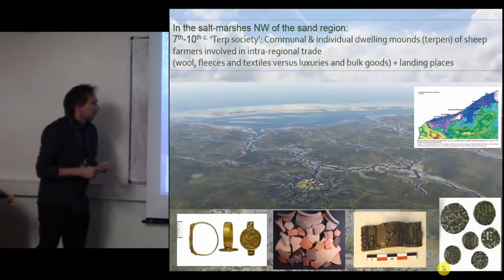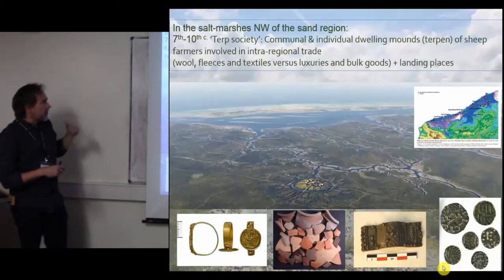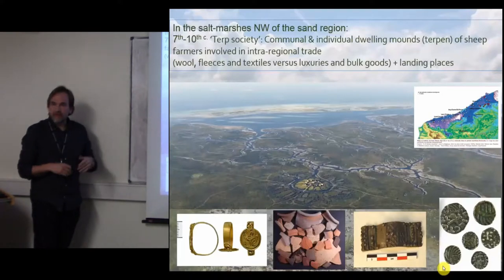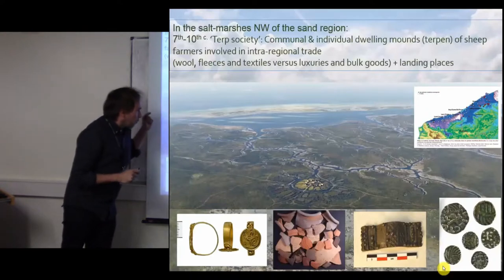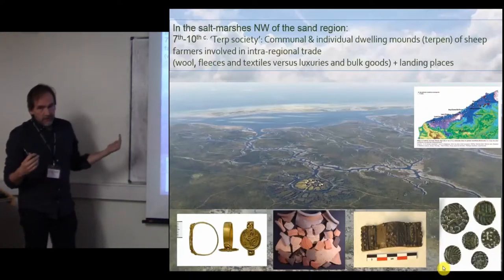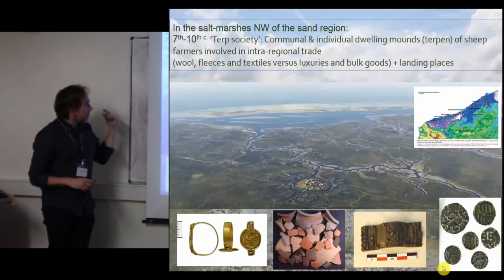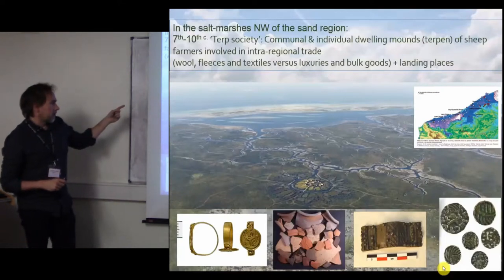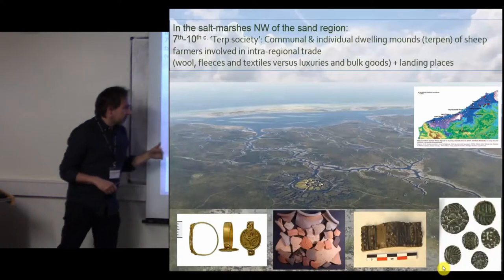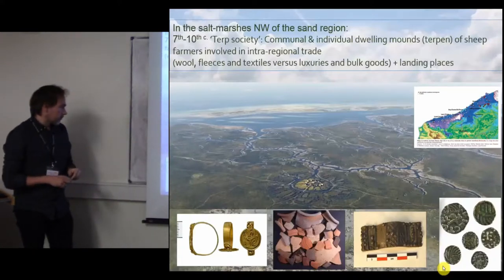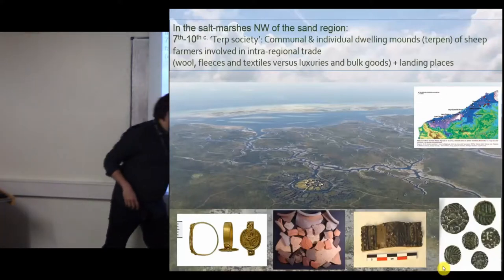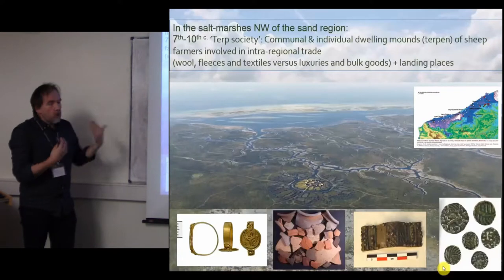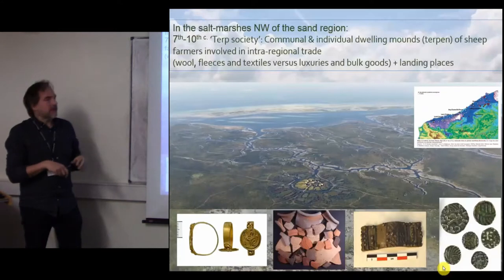We start the story with the Terp society. In the late Roman and early medieval period we have a very large salt marsh area, and these salt marshes were inhabited just like they were in Friesland. People in the salt marshes herded sheep — huge flocks — and produced textiles, fleeces, and wool that entered the trade network. The people who lived on the dwelling mounds had access to luxuries from the Rhineland, Scandinavia, and even from England. This was a very open society living in equilibrium with the tides and the salt marshes.